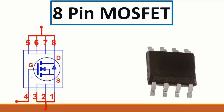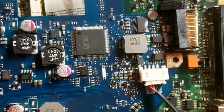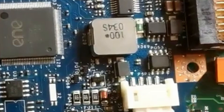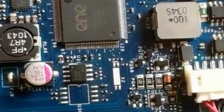The MOSFET receives the control signals at the gate. When it receives the control signal, the voltage will pass through this diode from source to drain or from drain to source, depending on whether it is an N-channel or P-channel MOSFET. For MOSFETs on the motherboard, the reference is Q or PQ, and for ICs we have U.